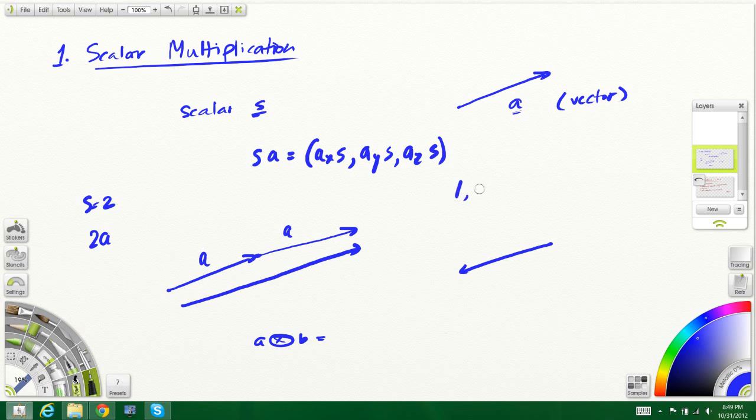For example, if the vector was this, it would become 2. One important point is that when you're doing scalar multiplication, the direction of the vector will never change except for one case, and that's when you multiply it by a negative number. For example, if this was a and we multiply it by negative 1, negative 1 times a will flip the direction of a in each axis. If it was negative 2, it would become negative 2.